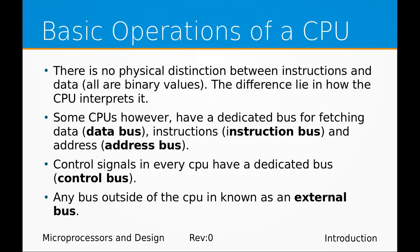The CPU does not know the difference between instructions and data — it all depends on how it interprets them. Since instructions can be represented as numbers and data can also be represented as numbers, they are all just numbers to the CPU. If we have a dedicated bus for fetching data, we call it the data bus. A dedicated bus for fetching addresses is called the address bus. We also have the control bus, used to send control signals, and any bus external to the CPU is called an external bus.